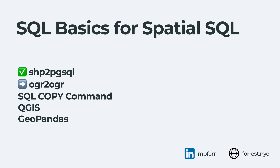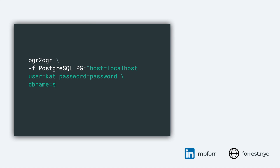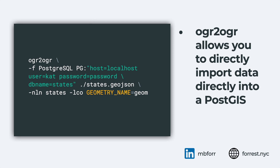The next tool is OGR2OGR — O-G-R to O-G-R. This is actually part of a larger library called GDAL. If you're familiar with GDAL, it's an excellent library. OGR2OGR is basically the service that allows you to translate one vector file type into another vector file type. It has the same functionality for raster file types, including rasterizing vector or vectorizing raster data. It's a really functional library that many other common tools use. Once you've installed GDAL, you use the OGR2OGR command, and I'll share installation methods in the post as well.